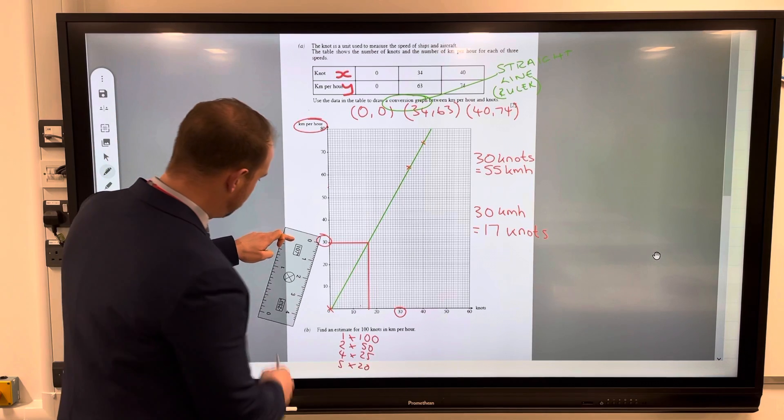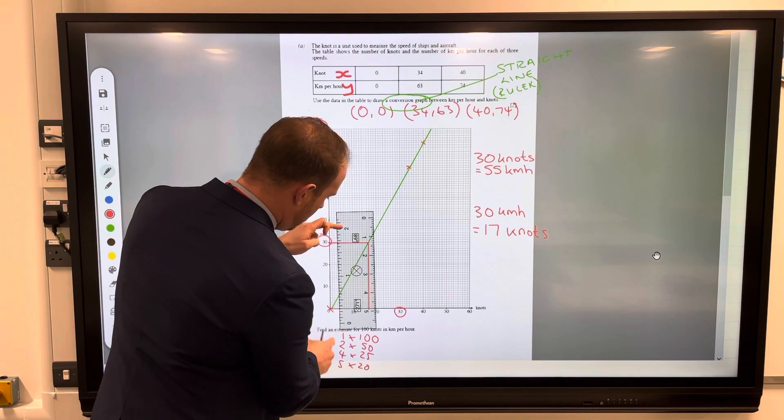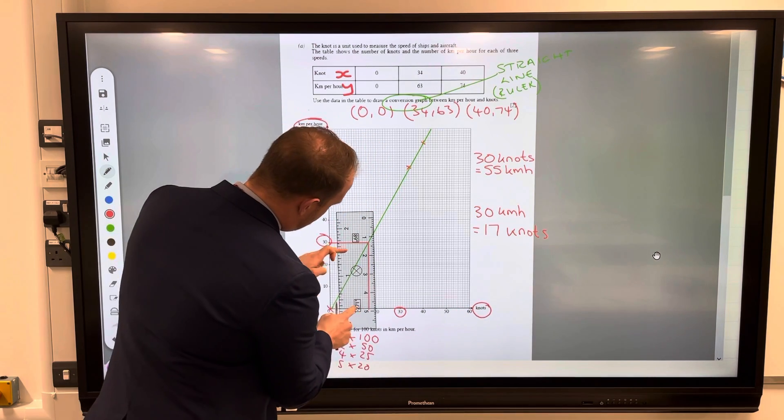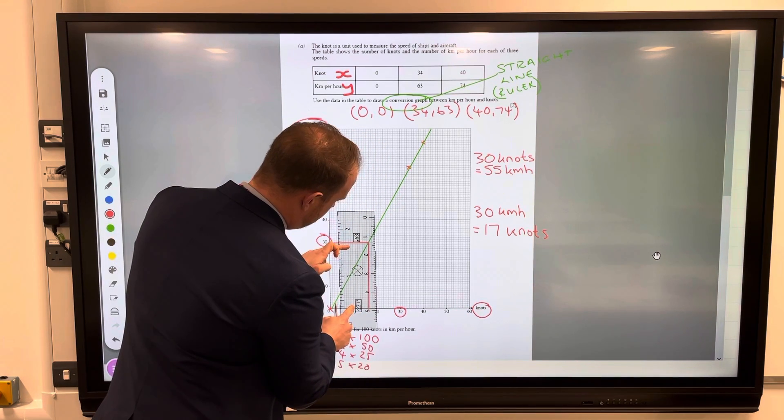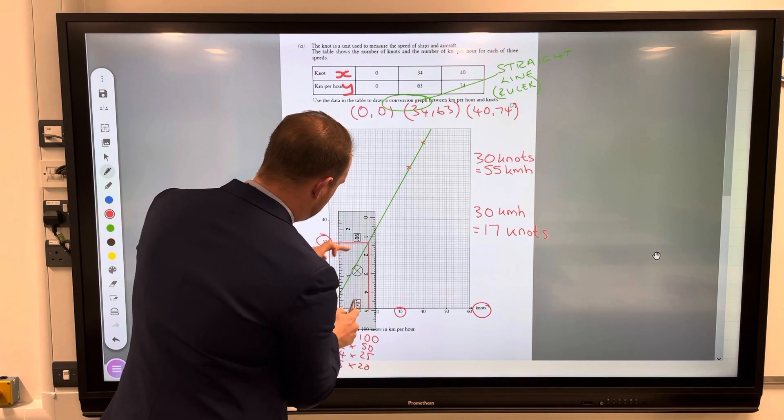So let's go for 20 then. Using my ruler to help me. 100 knots, so I've got to make sure I'm on the x-axis. Use the 20 to help me, make sure the rule is nice and straight.